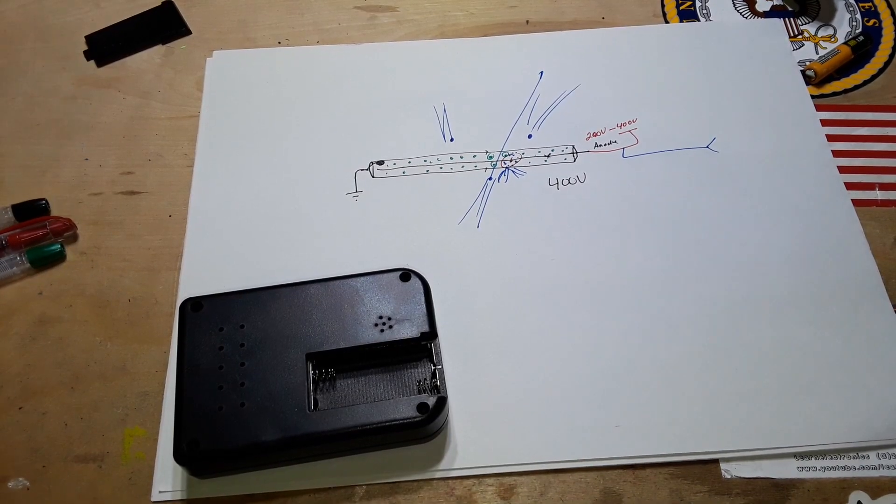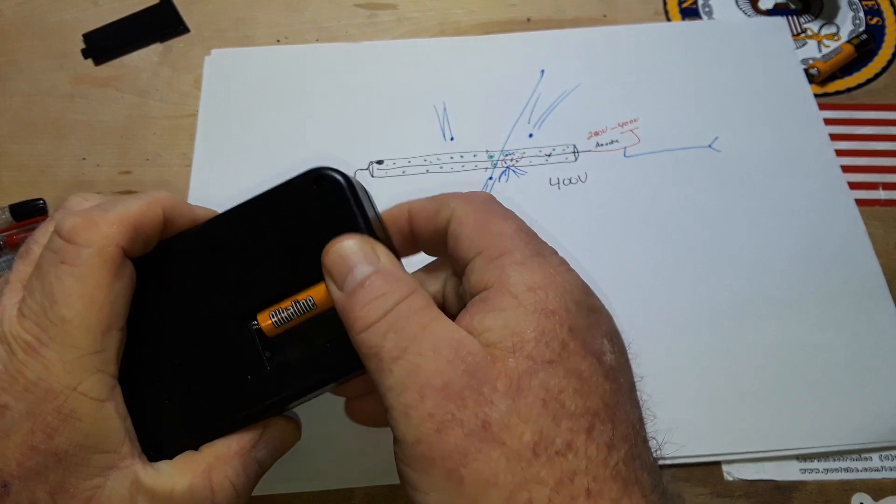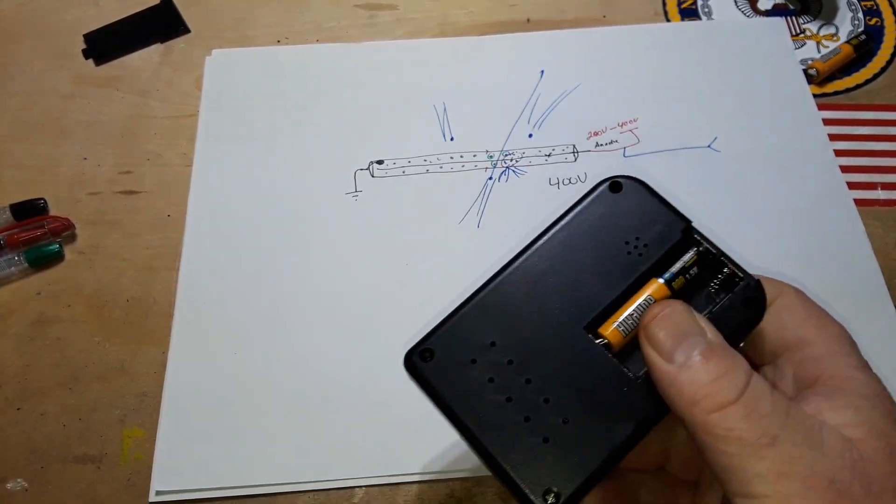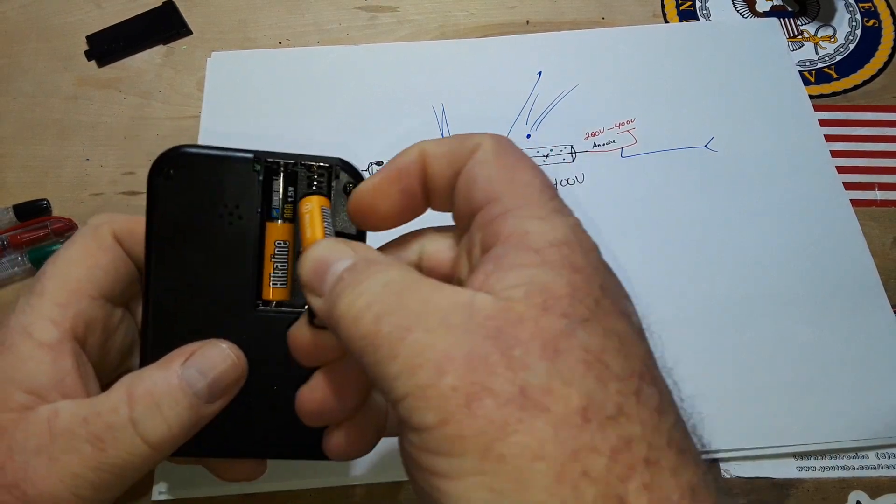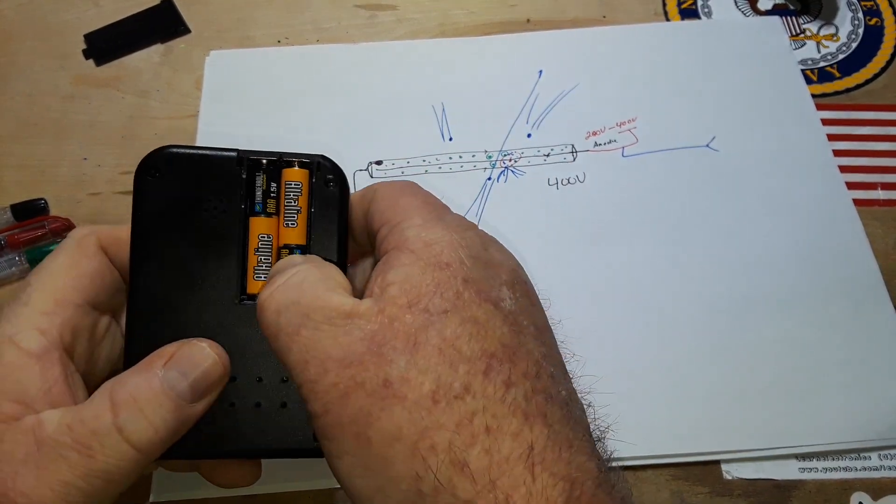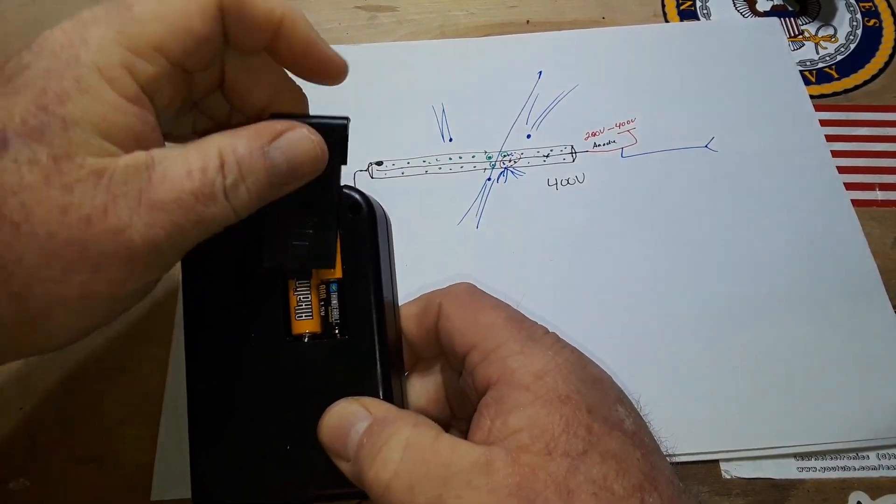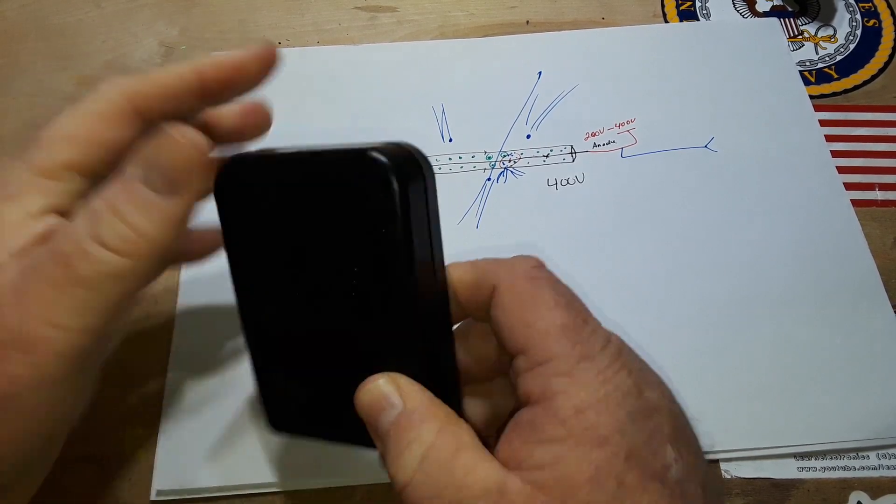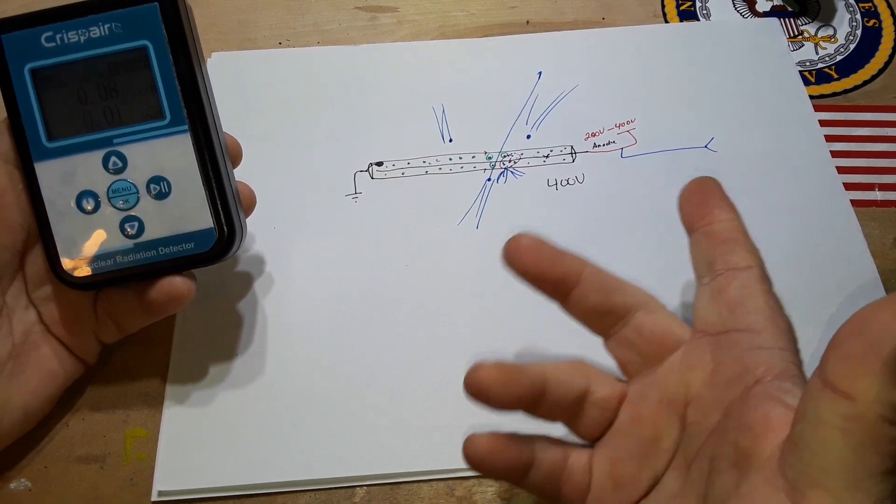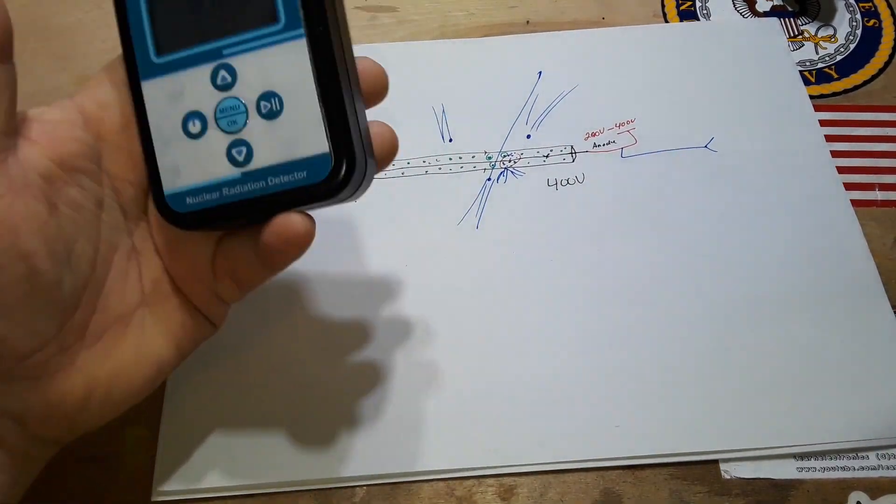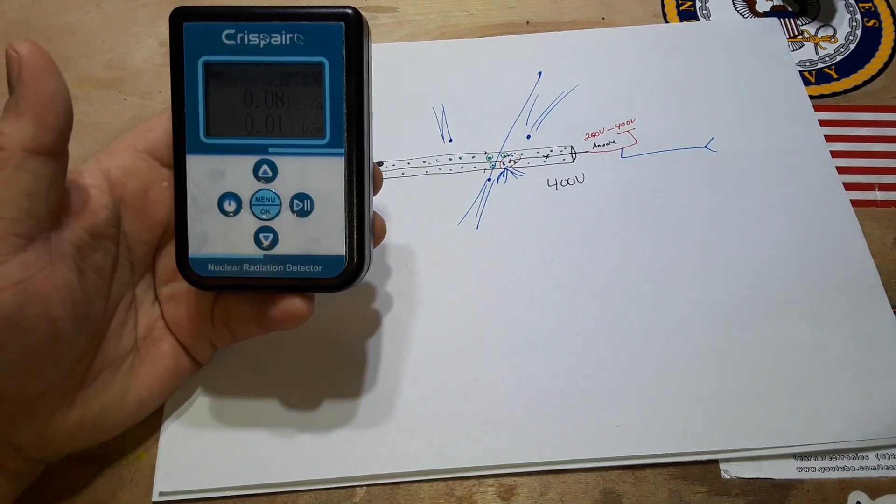All right, let's put this thing back together. So, basically, everything beyond that tube is window-dressing in these things. You could literally buy a GM tube off of eBay, hook it up to an Arduino, and it'll do everything this does here. I mean, they're really cool.